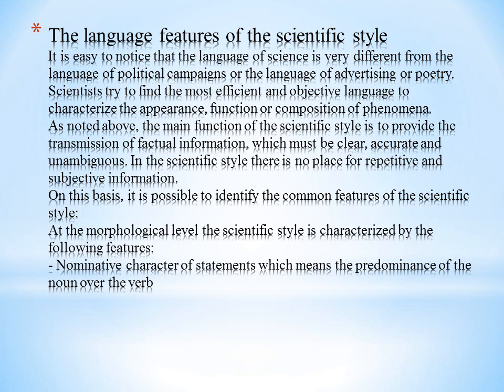At the morphological level, the scientific style is characterized by the following features: nominative character of statements, which means the predominance of the noun over the verb. The characteristic features include the neutrality of tone, the objective approach to information, the structuring of the text, and the availability of terminology and specific linguistic means adopted among scientists for a logical, adequate presentation of the material. Separation of scientific text into types is explained first by the difference in objects described across many disciplines and the content of research activities of scientists and the expectations of a potential audience.